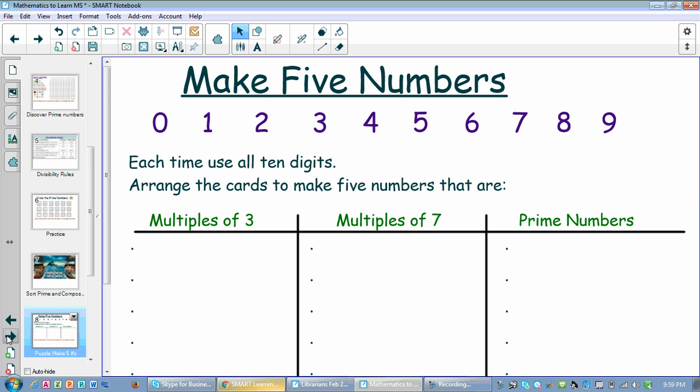I continue. I have some math riddles here. Again, I have infinite cloner digits at the top. All of these numbers, 0 through 9, are infinite cloners. And they are to make ten digit numbers. I'm sorry. They are to use all ten digits to make five numbers that are either multiples of three, multiples of seven, or prime numbers.